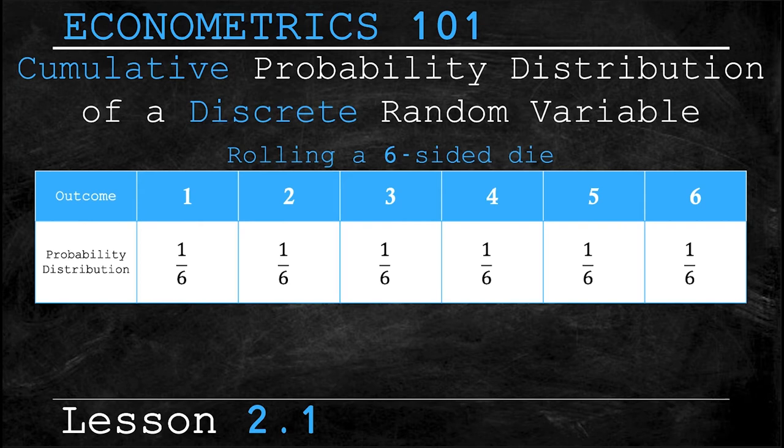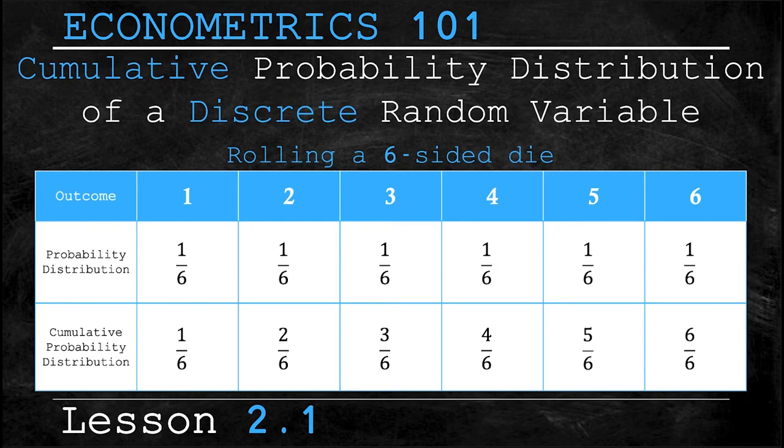Now it's worth noting that the probabilities for all events must sum to one. This is because one of these events has to happen and that's where cumulative probability ties in. Cumulative probability is the probability that a random variable is less than a specific value. So looking at this third row we can easily determine that the cumulative probability of rolling a four or less is four sixths or two thirds. But this was a simple example where all of the probabilities of each event were the same.